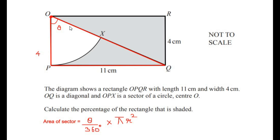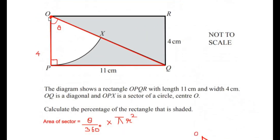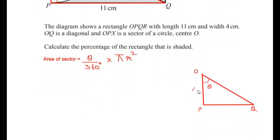We know that the angles in a rectangle are 90 degrees, so corner P is also 90 degrees, making this a right-angled triangle. Let me draw triangle OPQ again. We have OP as 4 centimeters and PQ as 11 centimeters. Since this is a right-angled triangle, to find θ we need to use one of the trigonometric ratios.